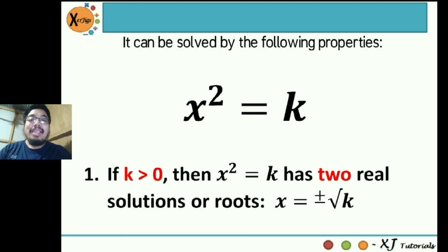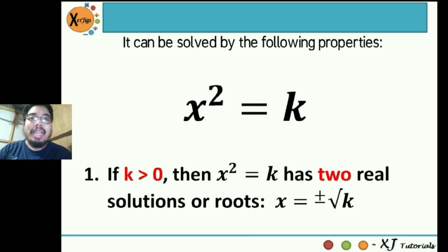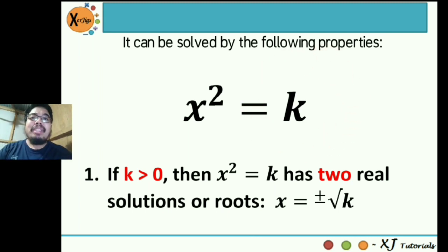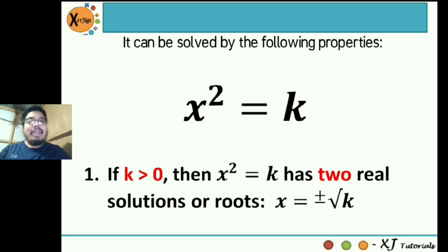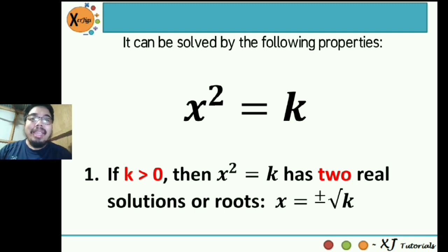The first property states: if k is greater than 0, then x squared is equal to k has two real solutions or roots. And they are x is equal to positive and negative square root of k. So if your k is greater than 0 — that is 1, 2, 3, 4, 5... 10 to the positive infinity — then that quadratic equation has two real solutions.